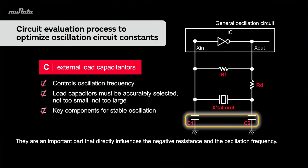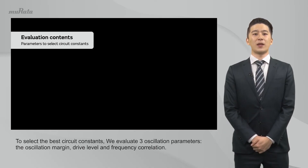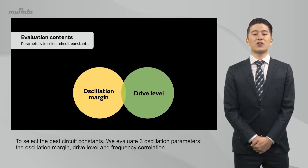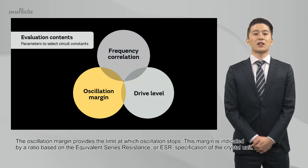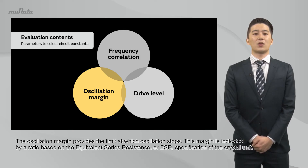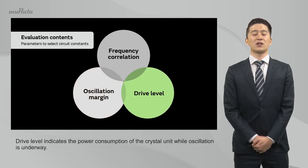They are an important part that directly influences the negative resistance and the oscillation frequency. To select the best circuit constants, we evaluate three oscillation parameters: the oscillation margin, drive level, and frequency correlation. The oscillation margin provides the limit at which oscillation stops. This margin is indicated by a ratio based on the equivalent series resistance, or ESR, specification of the crystal unit. Drive level indicates the power consumption of the crystal unit while oscillation is underway.